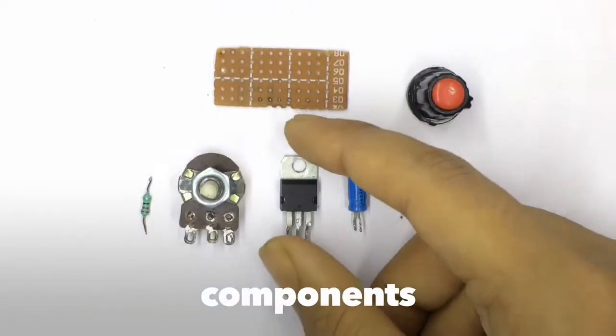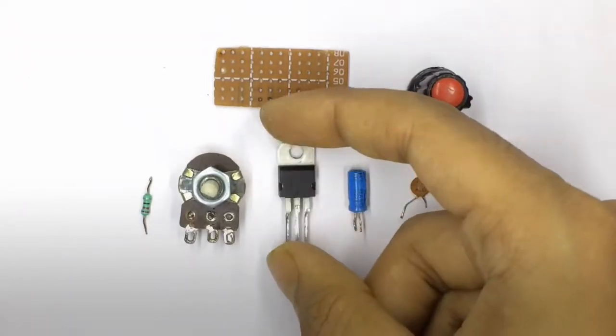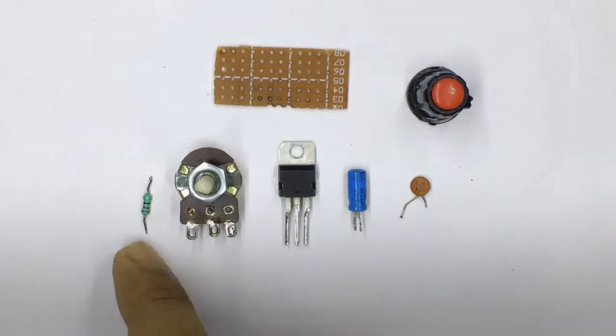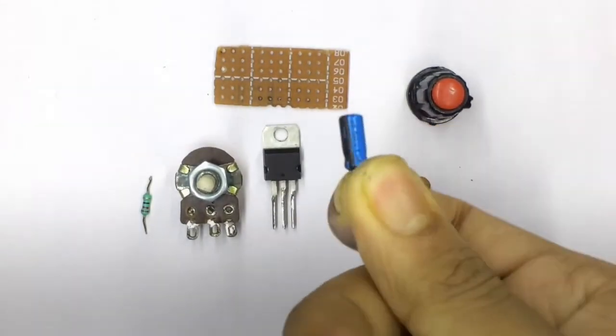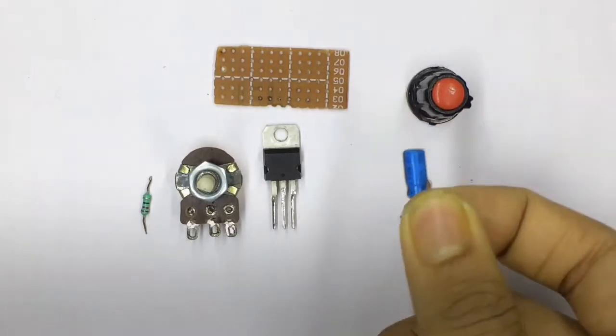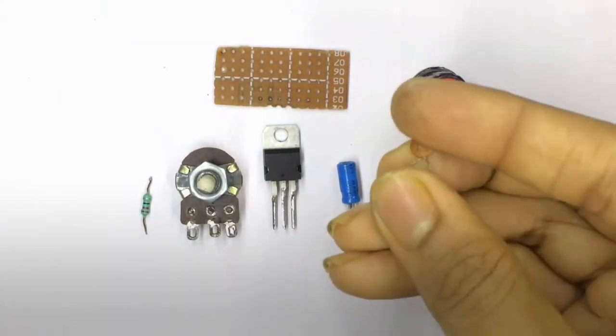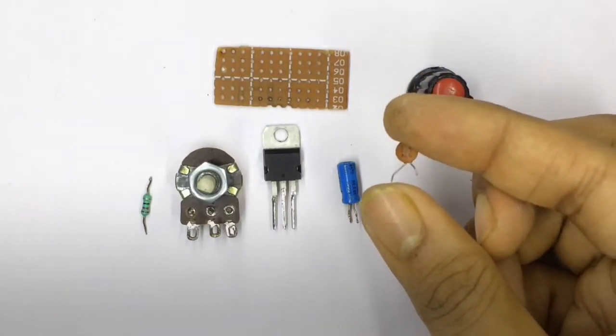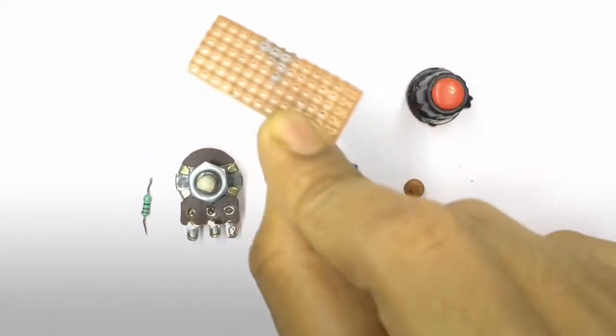You need one LM317 linear voltage regulator, 10k potentiometer, 220 ohm resistance, one microfarad 50 volt electrolytic capacitor, 104 ceramic capacitor (it's a 0.1 microfarad capacitor), and a piece of zero PCB.